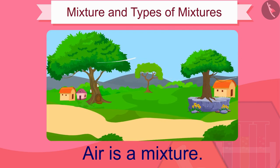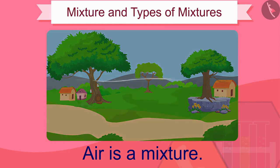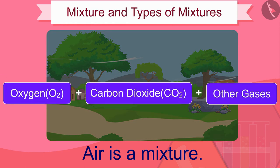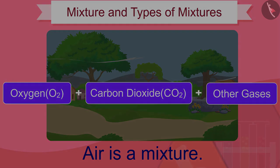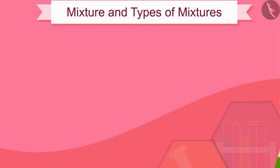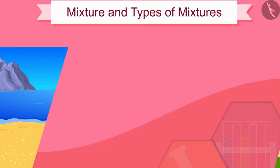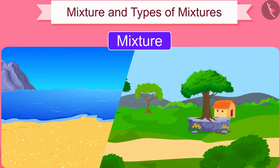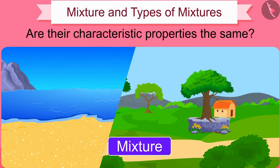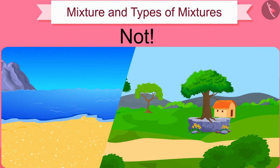For example, air is a mixture because it is made by mixing different types of pure substances and compounds such as oxygen, carbon dioxide, etc. Seawater and air are both mixtures, but are their characteristic properties the same? Of course not.